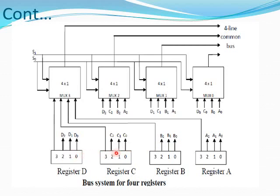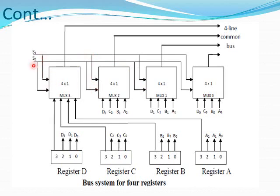The bus consists of four 4-by-1 multiplexers: multiplexer 0, 1, 2, and 3. Two selection lines, S1 and S0, are connected to the selection input of all 4 multiplexers. The S1 and S0 lines pass to multiplexer 1, multiplexer 2, and multiplexer 3 in the same way.